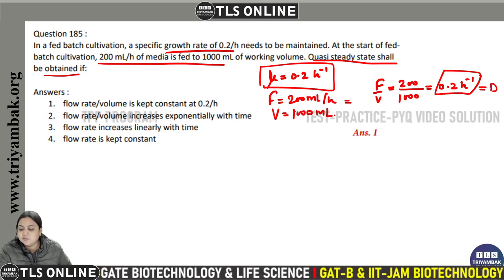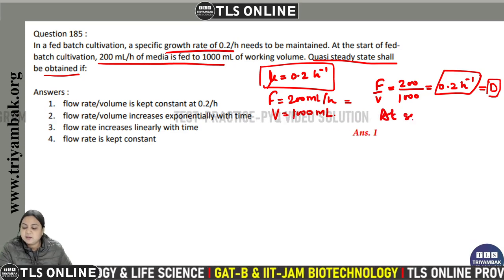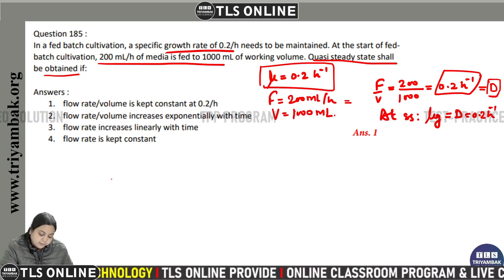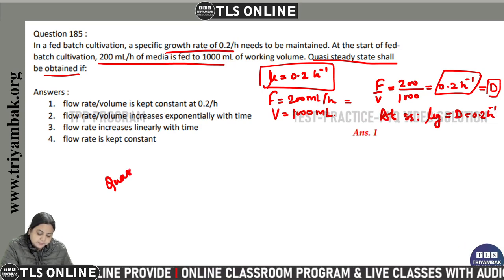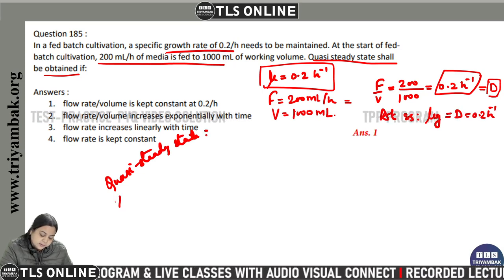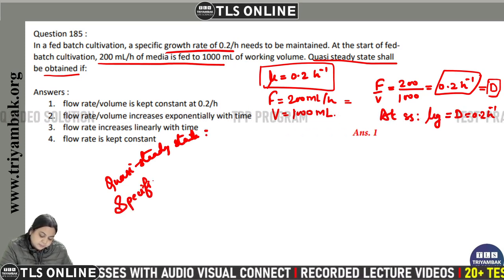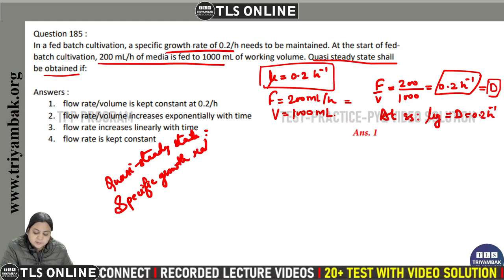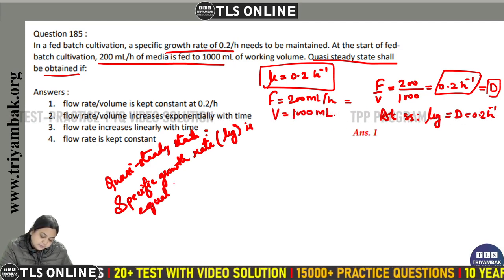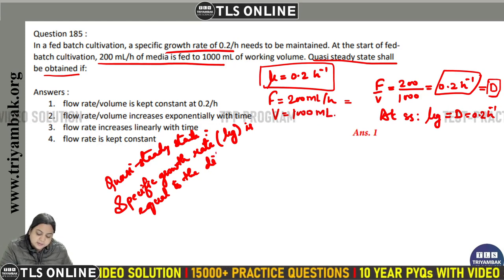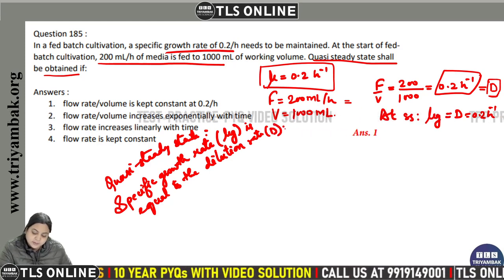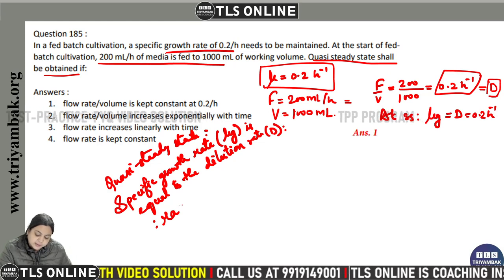This value of 0.2 per hour is the dilution rate. At quasi-steady state, the growth rate is equal to the dilution rate, which is 0.2 per hour. So in fed-batch cultivation at quasi-steady state, the specific growth rate (μ) is equal to the dilution rate (D), which means the ratio of media flow rate to volume must be considered.